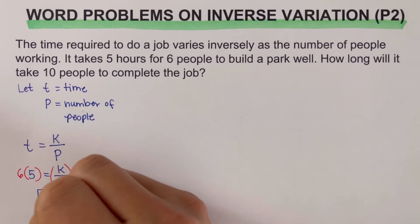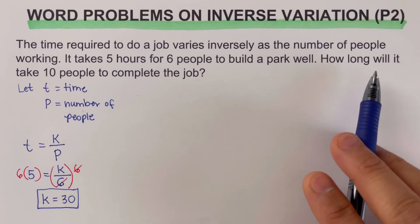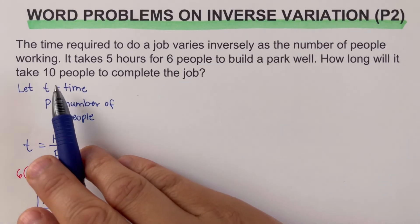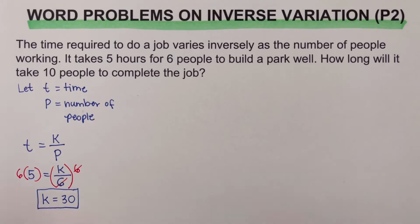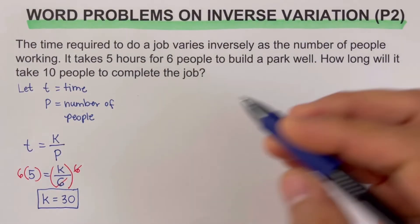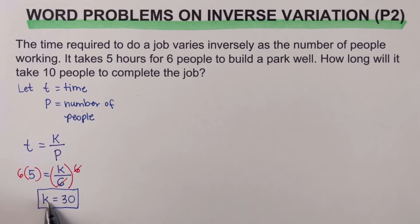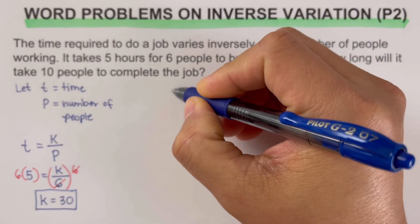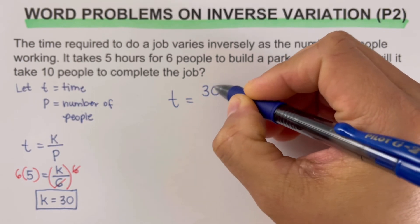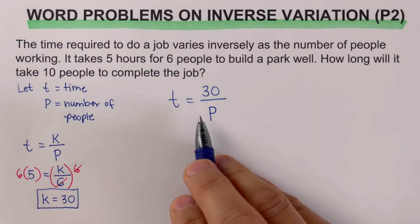We're not done yet — we need to determine the time it takes for 10 people to complete the same job. We write the working equation by plugging k equals 30 back in, so our working equation is t equals 30 over p.